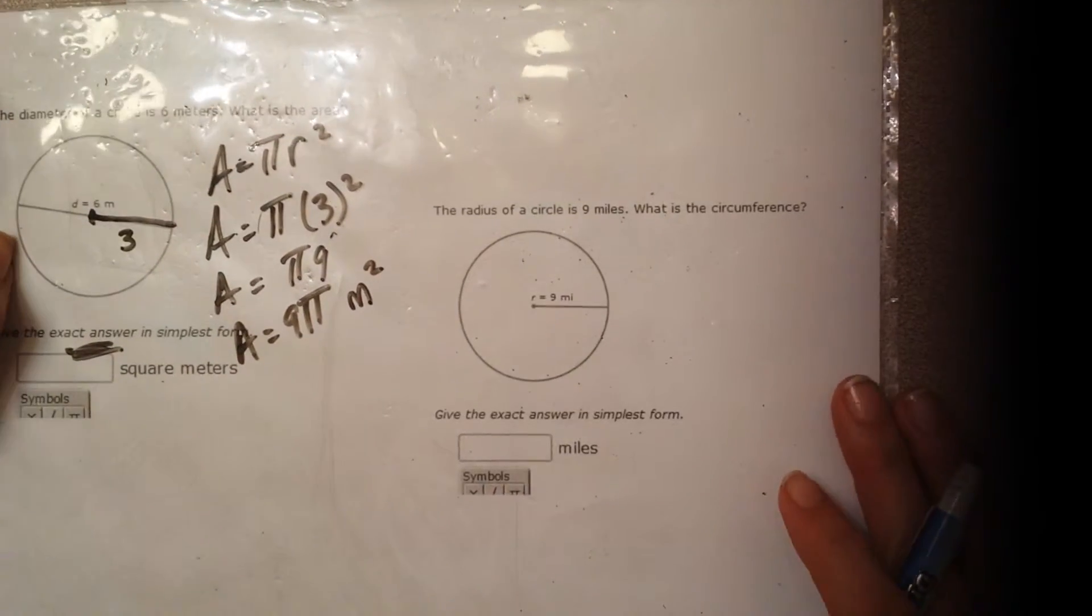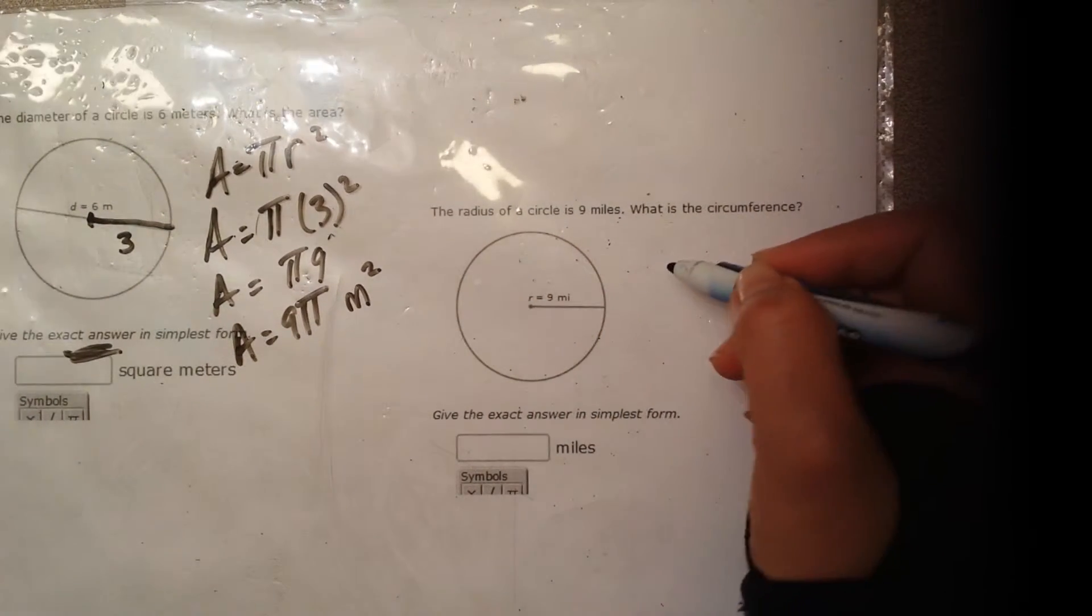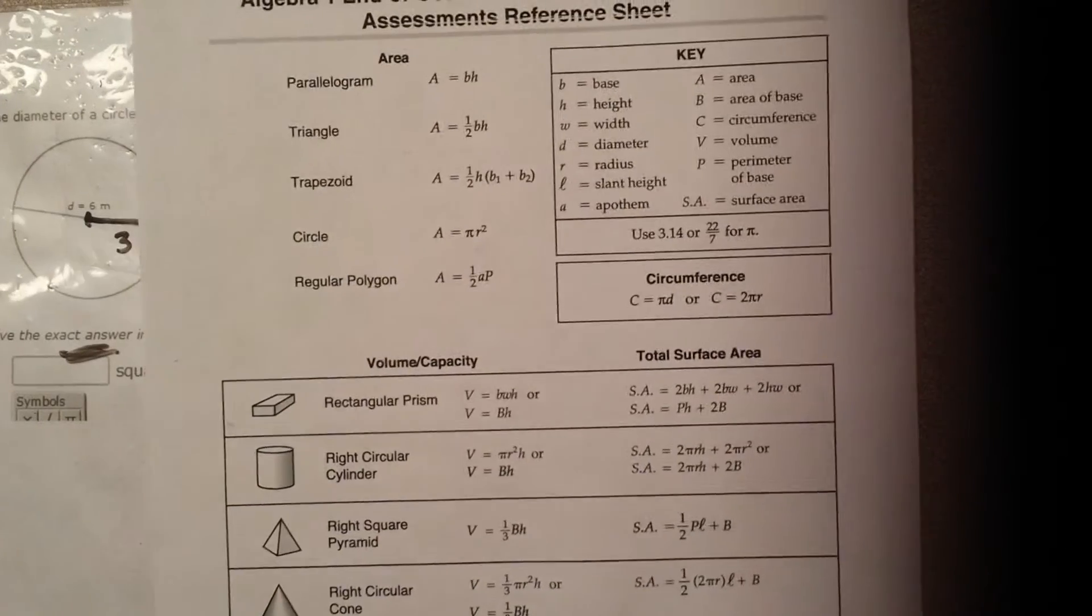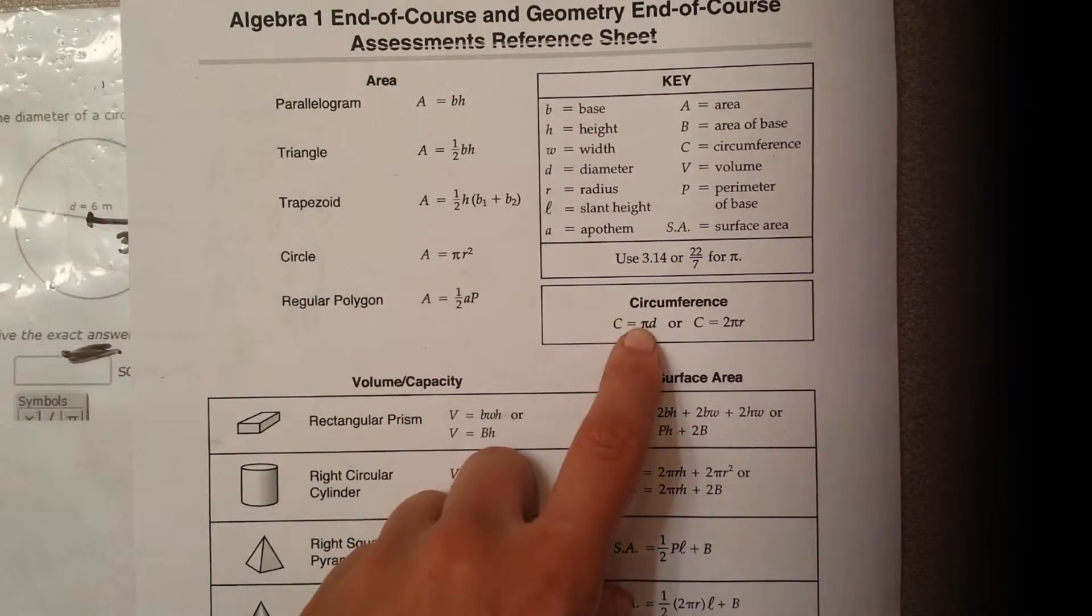Okay, let's take a look at another example. The radius of a circle is 9. What is the circumference? So you're looking for circumference. Again, take your reference sheet, and you want to look for circumference. So this is area. Oh, look, there's circumference.